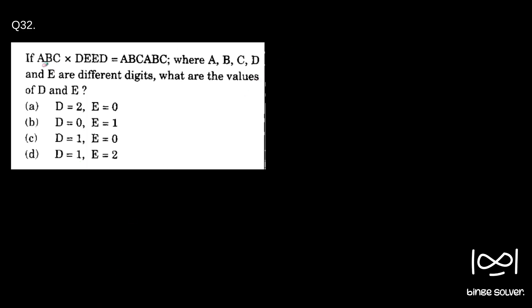So we are given a three-digit number and a four-digit number, and the result is a six-digit number where the first three digits are abc and the last three digits are abc. This number is getting repeated twice. We are asked to find the values of d and e.